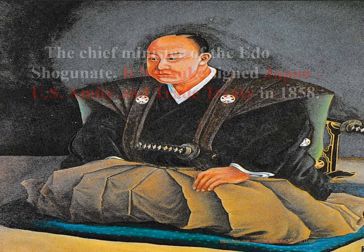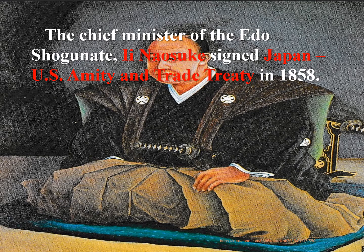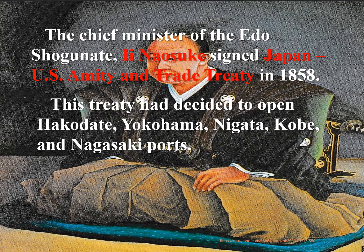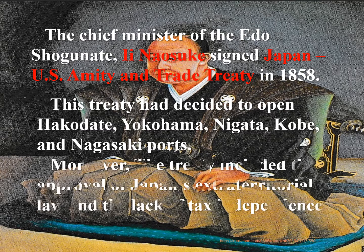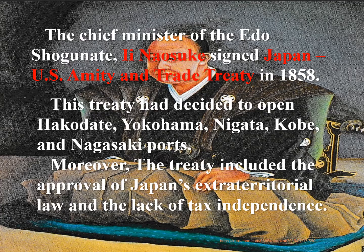The chief minister of the Edo shogunate, Ii Naosuke, signed the Japan-U.S. Amity and Trade Treaty in 1858. This treaty decided to open Hakodate, Yokohama, Niigata, Kobe, and Nagasaki ports. Moreover, the treaty included the approval of Japan's extraterrestrial law and the lack of tax independence.